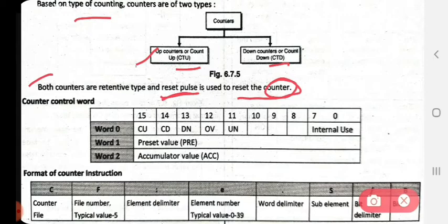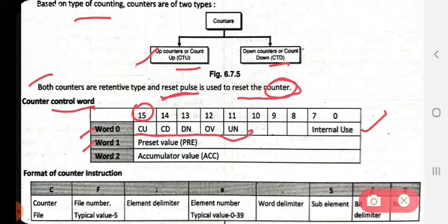Now let's look at the counter control words. The first word, word 0, has bits used for status — we will see those in detail. Word 1 is the preset value, indicated as PRE. Word 2 is the accumulator value, indicated as ACC.